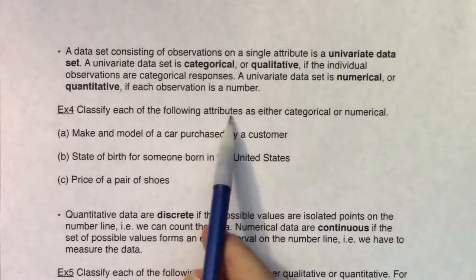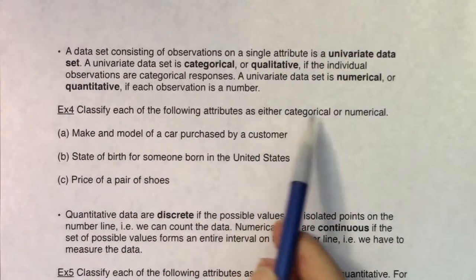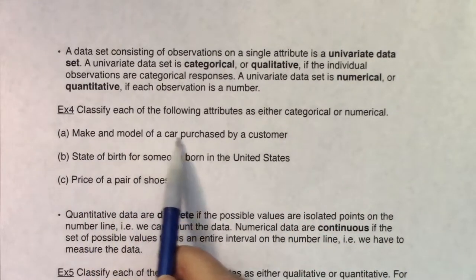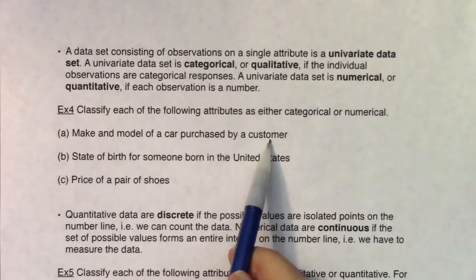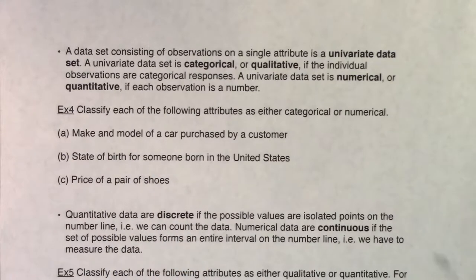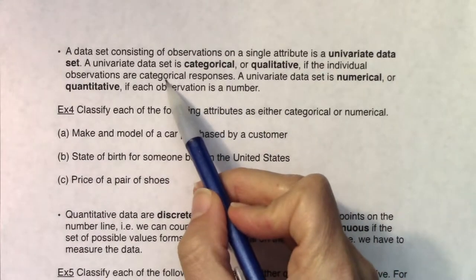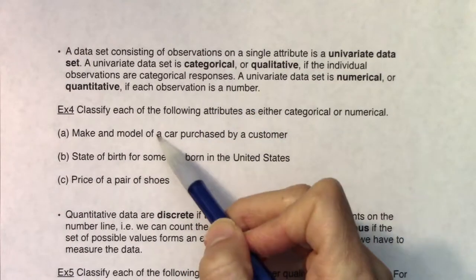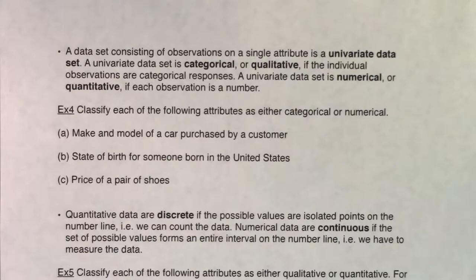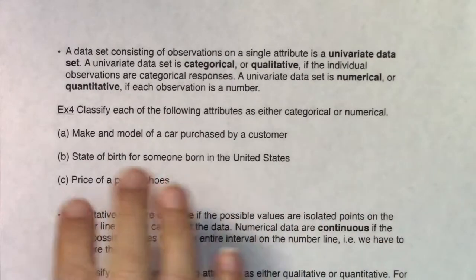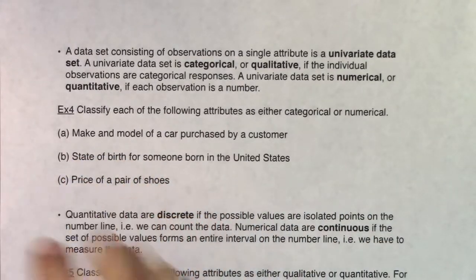Classify each of the following attributes as either categorical or numerical. Make and model of a car purchased by a customer. If I were to ask you what is the make and model of your car, is your response going to be categorical or a number? For me personally it's a Toyota Corolla. That is not a number. I didn't say my car is seven. This is a categorical variable.